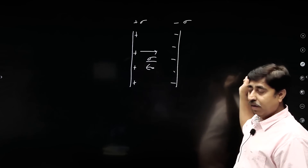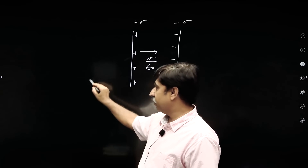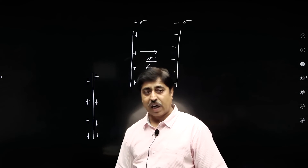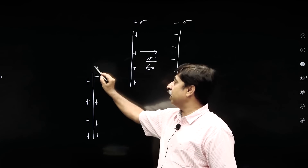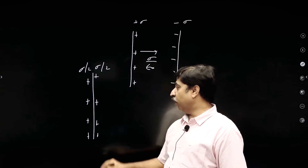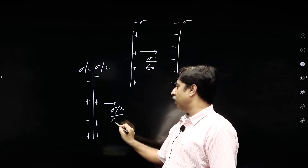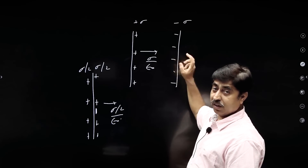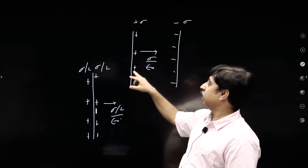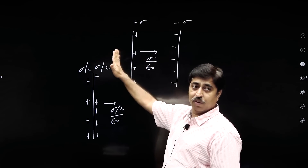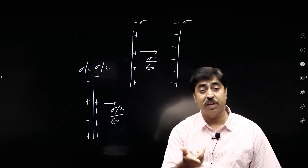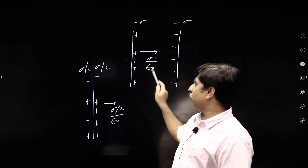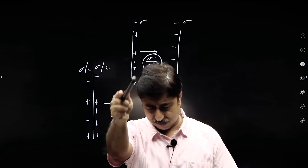If I remove this plate far away, the surface charge density will not remain sigma. For a flat plate, the charge will spread on both sides, so the charge density becomes sigma by 2 on each side, and the field becomes sigma by 2 epsilon naught. But when you bring the negative plate close, the whole charge moves to the front face — there is no charge on the back — so the charge density becomes sigma again, and the field is sigma by epsilon naught.